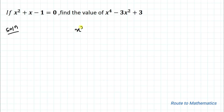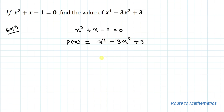We have given x² + x - 1 = 0 and we are asked to find the value of this polynomial. Let's take the given polynomial as p(x) = x⁴ - 3x² + 3. In the next step, let's assume this quadratic equation as t(x) = x² + x - 1. Now let's use the long division method to find the factors of p(x).